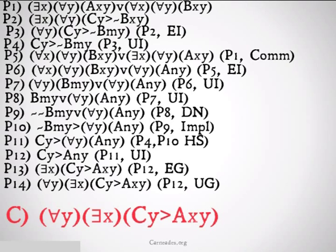Before we finish, it's important to check whether we've applied universal generalization correctly. We should notice that the Y we universally generalize exists in previous premises — in premise 6 and premise 3, which were obtained by existential instantiation. In premise 6, the Y is bound by a universal quantifier in both parts of the disjunction. In premise 3, the Y is also bound by the universal quantifier on the outside. This is another reason to do existential instantiation first — so you don't end up with unbound variables that will mess up the universal generalization you'll inevitably need at the end of the proof.